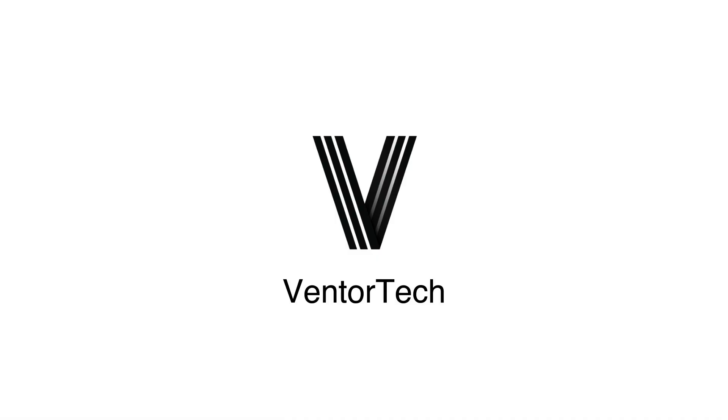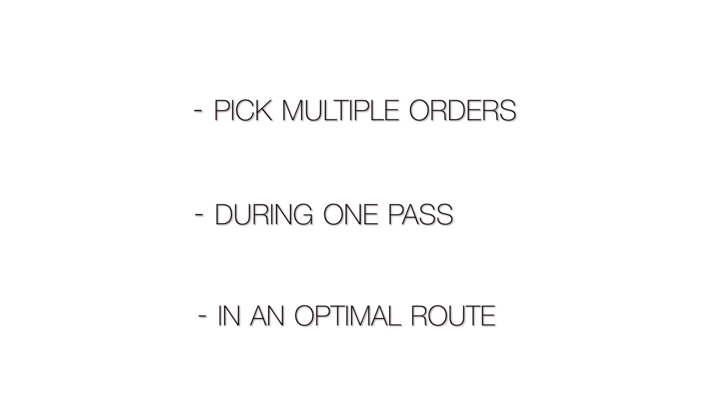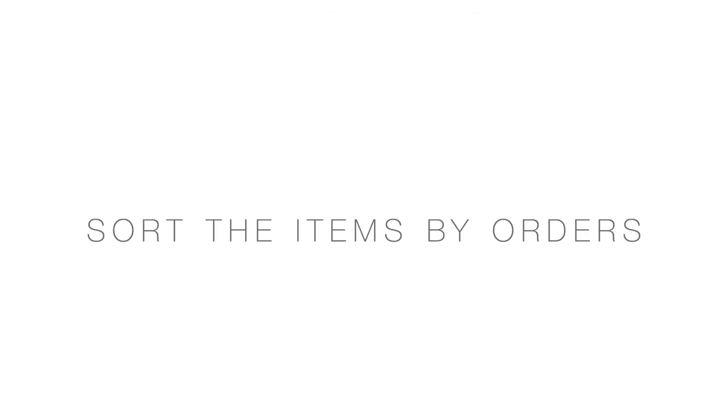In this video, I am going to show you how with the vendor app you can pick multiple orders during one path through a warehouse in an optimal route, and sort the items by orders while doing the picking. So your packers don't need to spend time sorting items for each order sent to the packing zone. This method is called cluster picking.